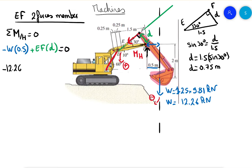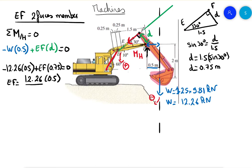Substituting into the moment equation: minus 12.26 times 0.5 plus EF times 0.75 equals zero. Solving, EF equals 12.26 times 0.5 divided by 0.75, which equals 8.175 kilonewtons. That's the first answer.